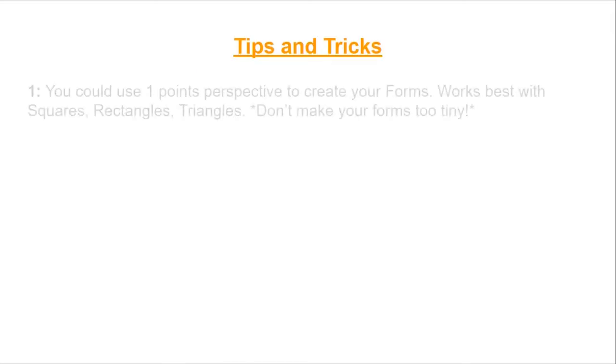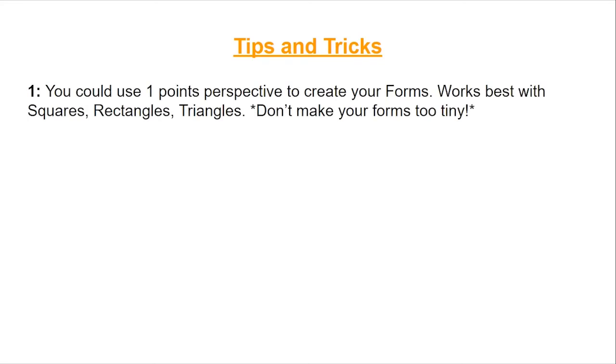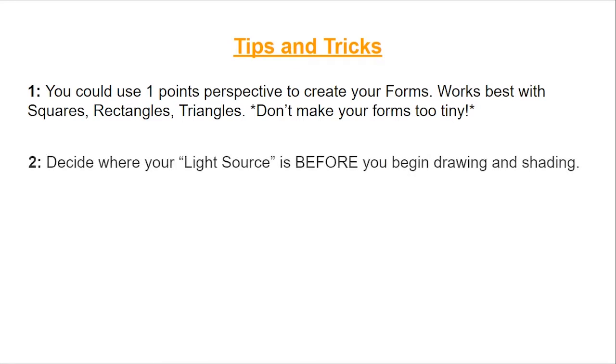So when you do your practice ones and maybe a final project, you could use one point perspective to create your forms. That's one of my tips. It works best with squares, rectangles, and triangles. And make sure you're not drawing things too small, otherwise it's going to be hard to shade them. And you need to decide where your light source is before you begin drawing and shading.